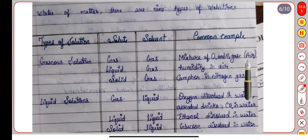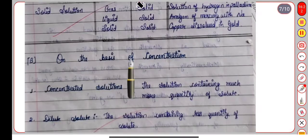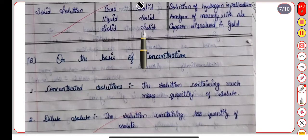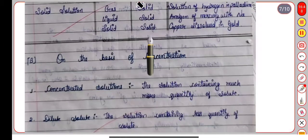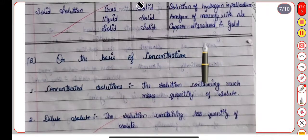If the solute is liquid and the solvent is liquid, an example is glucose dissolving in water. For solid solutions, if the solute is gas and the solvent is solid, an example is hydrogen in palladium. If the solute is liquid and the solvent is solid, an example is amalgam of mercury with sodium. If both solute and solvent are solid, an example is copper dissolved in gold.